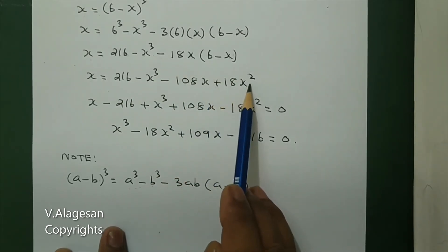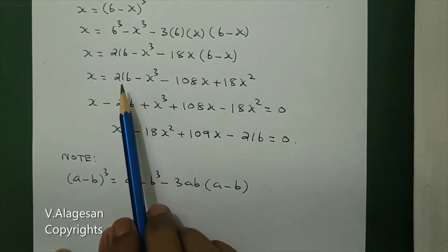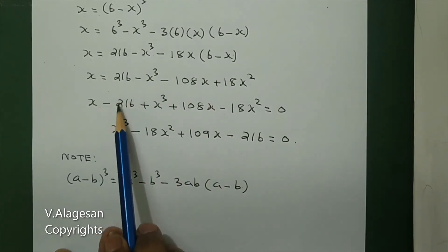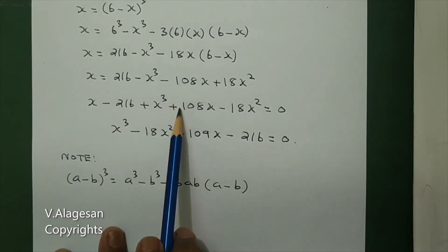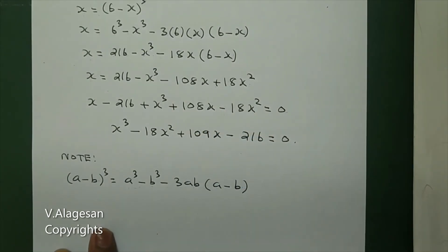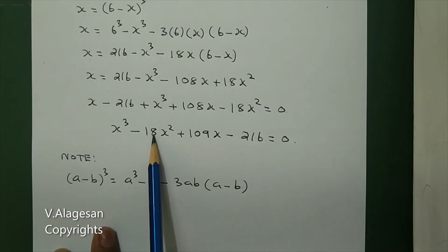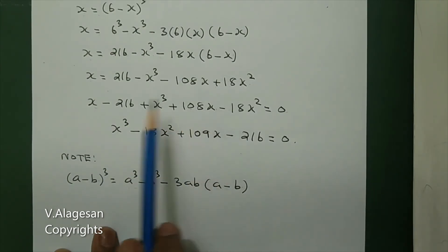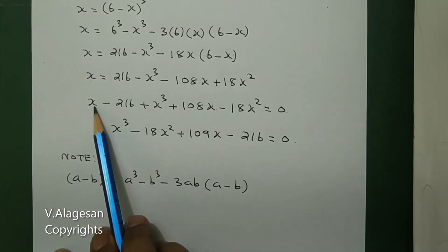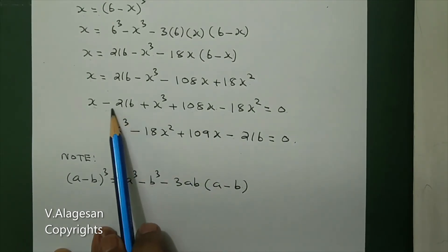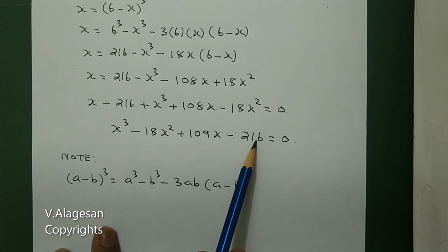After expanding, we get the terms including minus x cubed. Combining like terms, 1x plus 108x equals 109x, minus the constant term 216 equals zero.